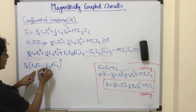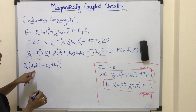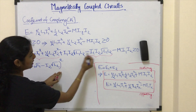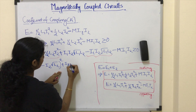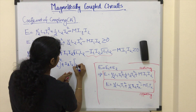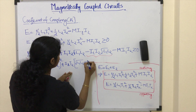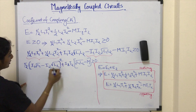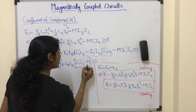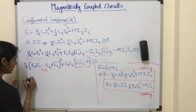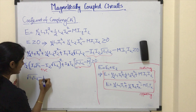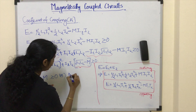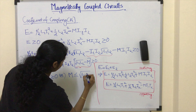Expanding (A minus B)² gives A² minus 2AB plus B², which matches those grouped terms. The remaining terms have I1·I2 in common, so factoring out gives I1·I2·(√(L1·L2) minus M) ≥ 0. Since the square term is always positive, we need √(L1·L2) minus M ≥ 0, which means M must be less than or equal to √(L1·L2).